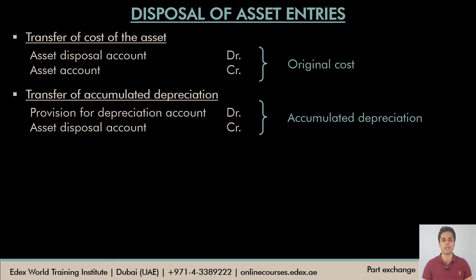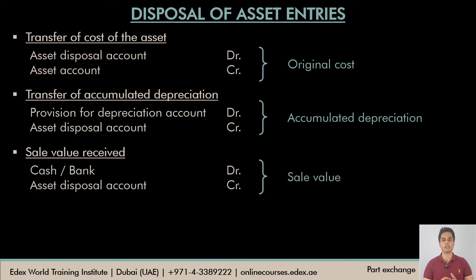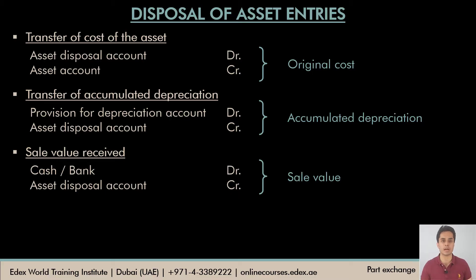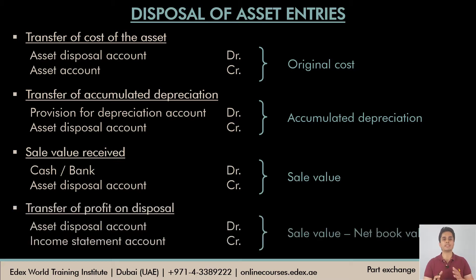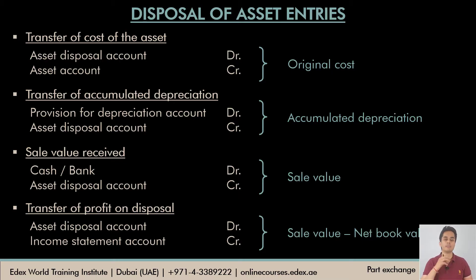Accumulated depreciation till date means total depreciation provided on the asset that is disposed of. The third entry records the sale value: cash or bank is debited depending on whether cash or a cheque is received, and the asset disposal account is credited. Finally, the difference in the asset disposal account helps us calculate the profit or loss on disposal. If the sale value is greater than the net book value, it's a profit; if lower, it's a loss on disposal.